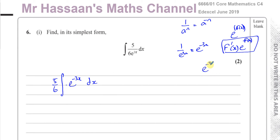For example, if it was e to the power of minus 3x squared, I wouldn't be able to integrate that using this method, because outside the function I have a constant, but if I differentiate minus 3x squared, I get an x term: minus 6x. However, if the integrand said x times e to the power of minus 3x squared, I could use the reverse of the chain rule, because the differential of the inside is of the form of x, and I'd be able to integrate it.